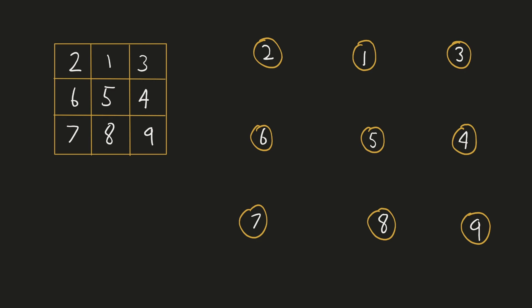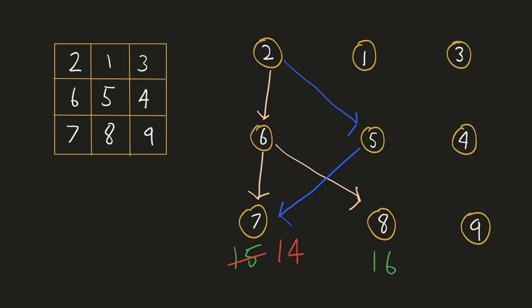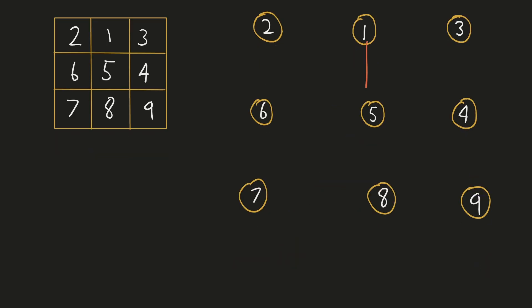For example, if we take one path the sum would be 15, a different path gives 16, and another gives 14 — that is the minimum seen so far. Another path gives 16 again. Out of all paths, the minimum falling path has a sum of 13. Similarly, there is another minimum falling path with the same sum of 13.